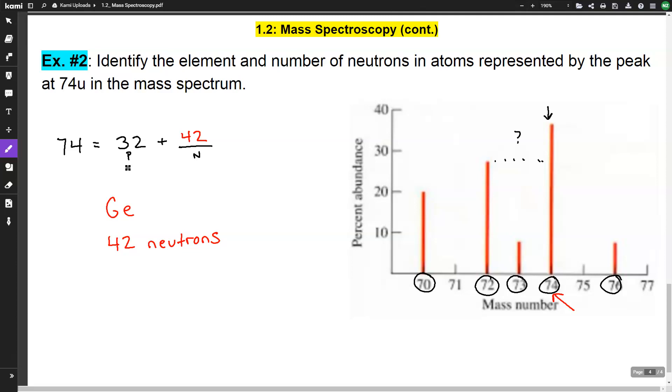Like I said, you could have done the same thing where you did every single mass times the abundance. But this case, it was pretty obvious that it was going to be between 72 and 74, somewhere in there. So we use a little bit of estimation. And then we just figured out how many neutrons we had. And that's it. So you can do the math if you want. You can estimate if it's easy. But either way works. And that's mass spectroscopy.